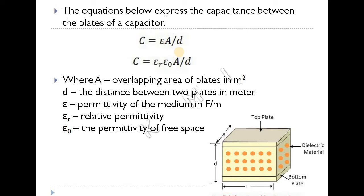A is the overlapping area of the plates, D is the distance between the two plates, epsilon is the permittivity of the medium, epsilon-R is the relative permittivity, and epsilon-0 is the permittivity of free space.